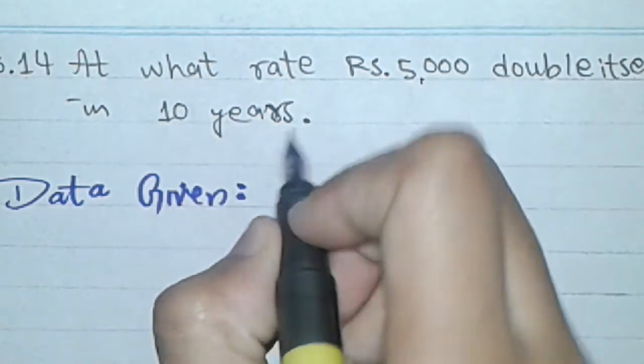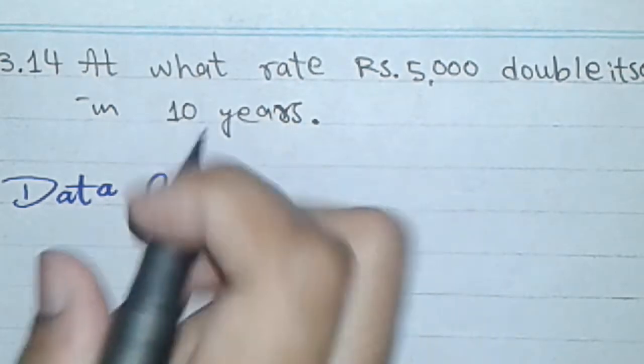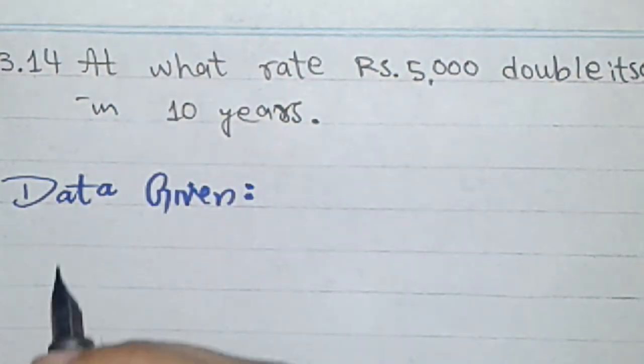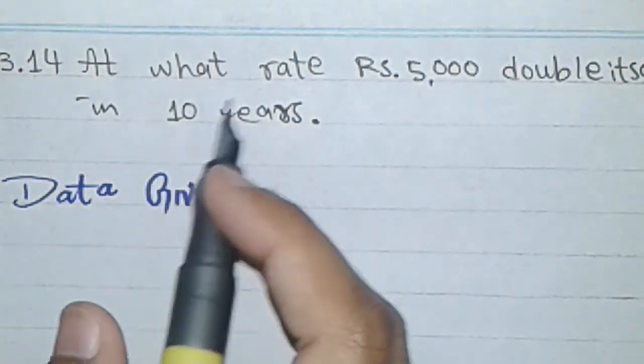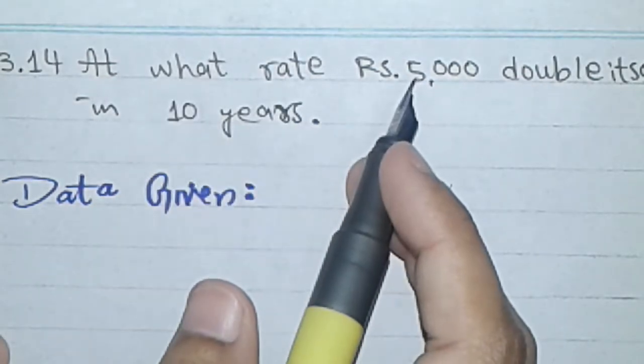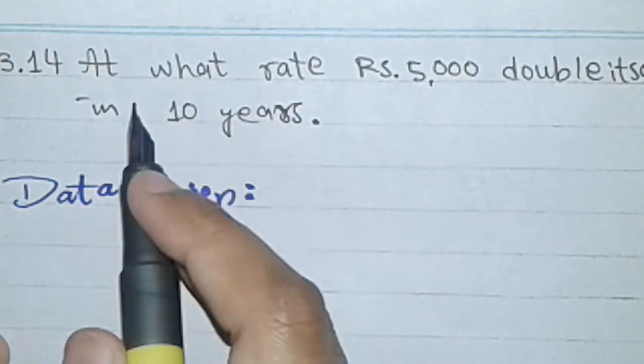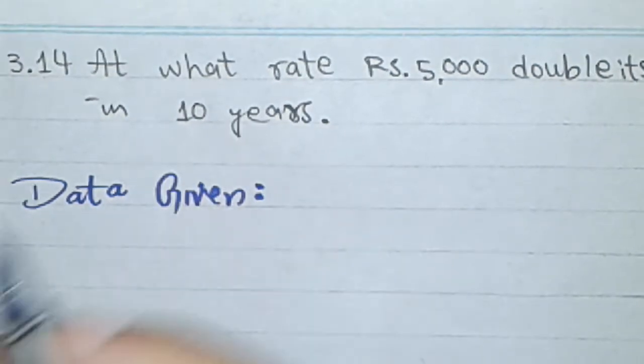So here is the rate. Rate we will find. The other things that we have given in data, we will simply put it here. So here is the amount, and time will be given.